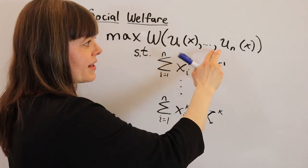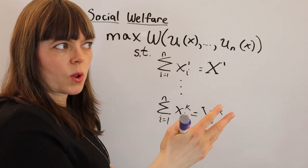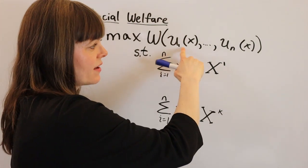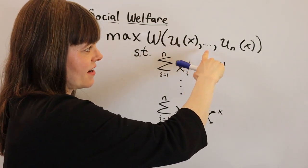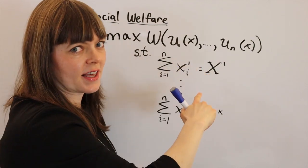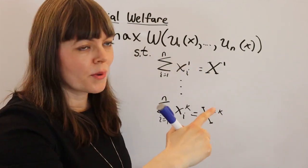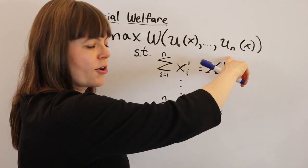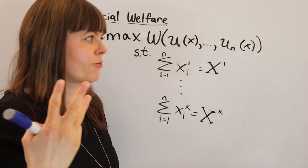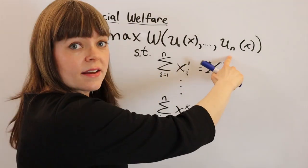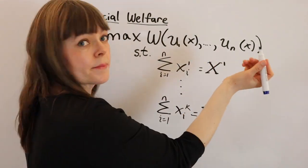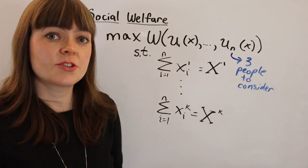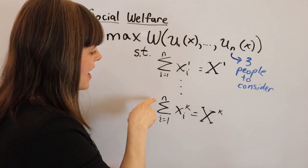So we've got social welfare, and it's a function of everybody's utility. Well, how many people do we have? We have three people. So utility of person one is given here, and then dot dot dot, meaning we're adding up everybody's utility, so the next thing is utility of person number two. And then finally we end that utility of the last person that we have to consider, which in this case is person number three. So n is going to be three, three people to consider, so n equals three. So that will be the case whenever we see an n in this problem.